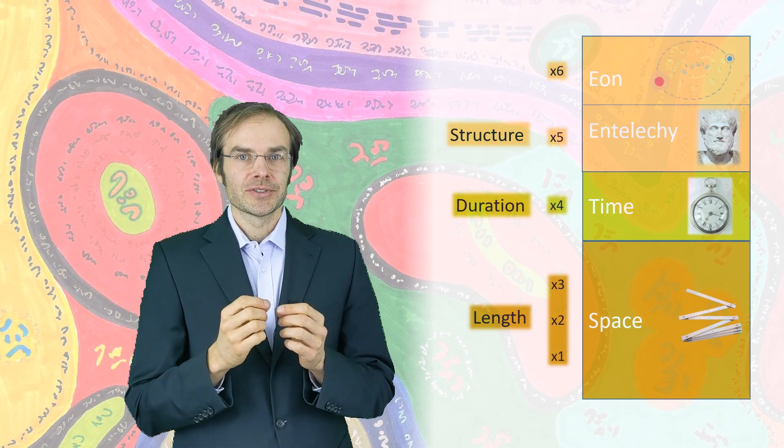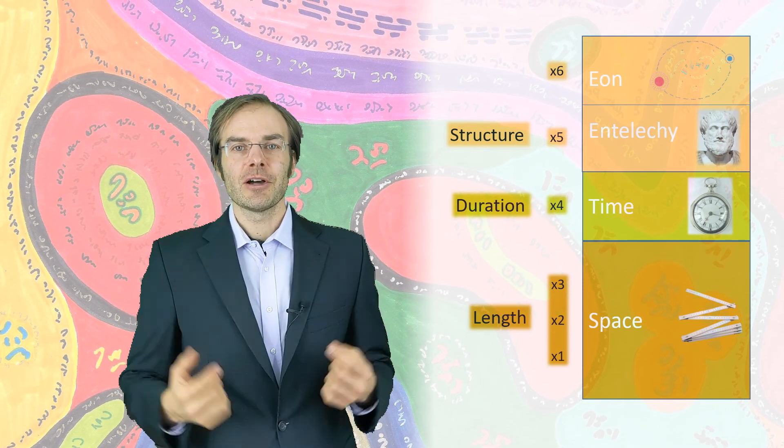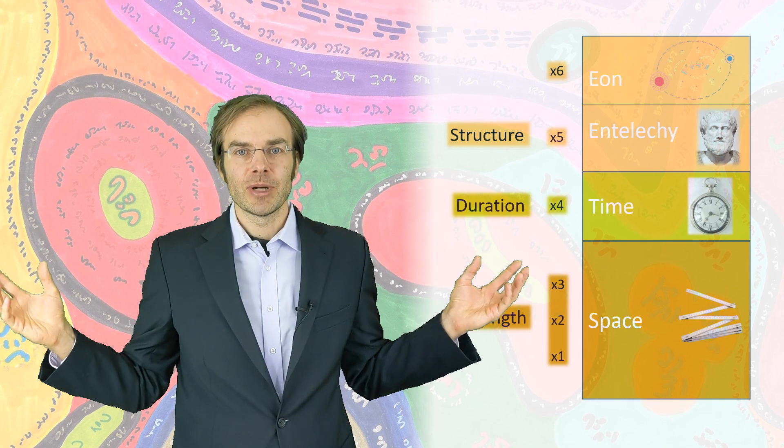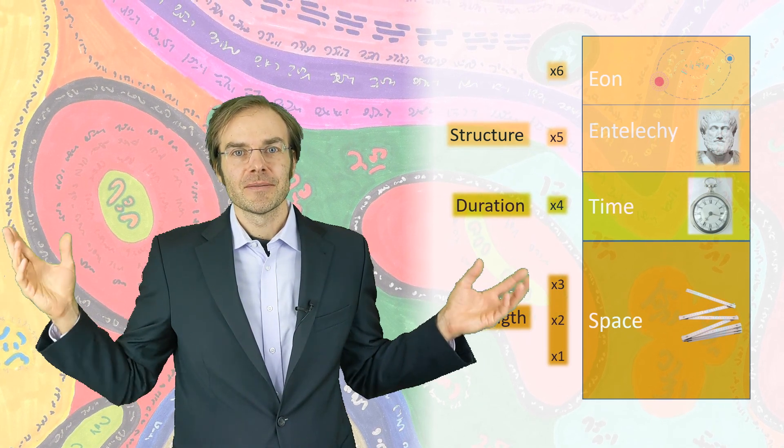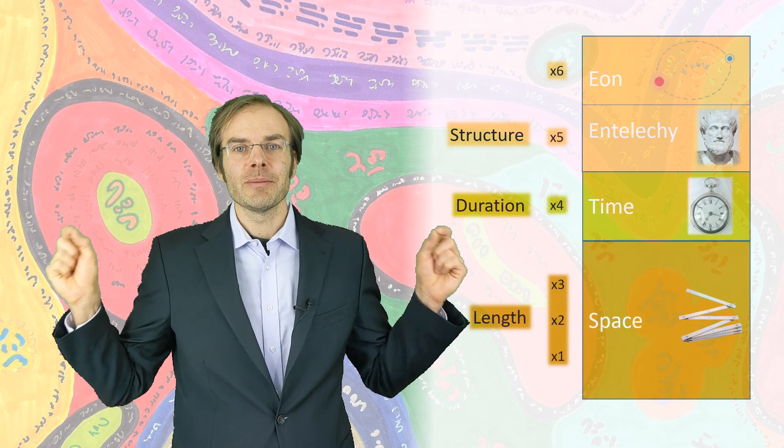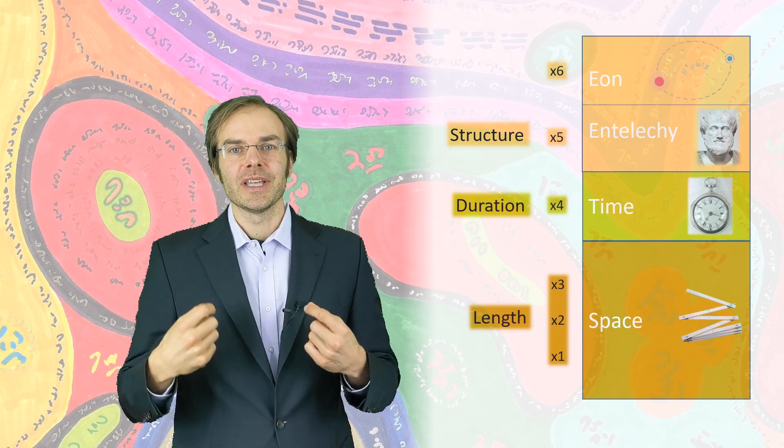And two structures which have nothing in common, they are infinitely far apart. That's the kind of scale we need to imagine when dealing with coordinate x5.